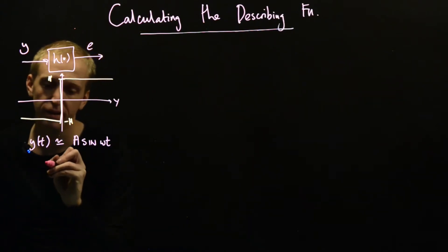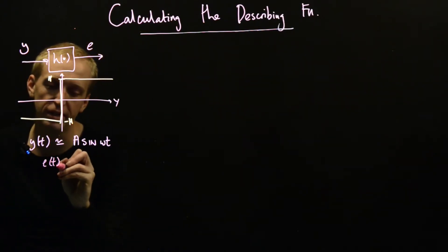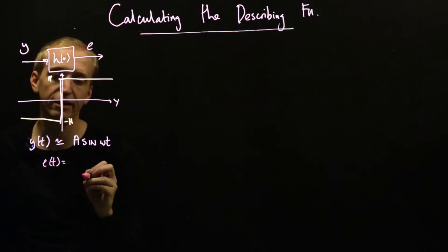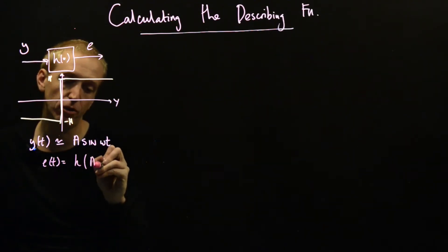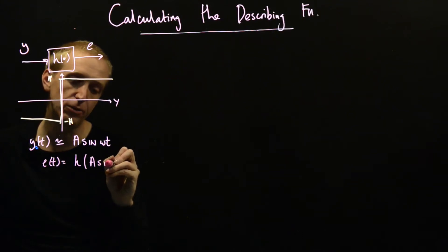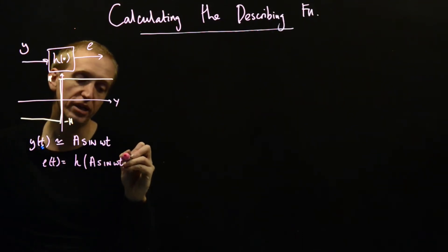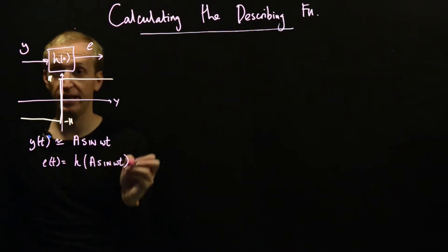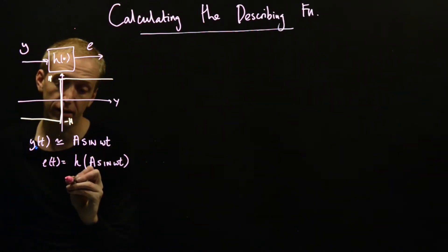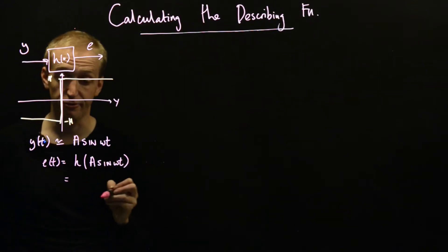And how do we do that? Well, we just introduced the signal e(t), which is the output of our nonlinearity, which is equal to our function h acting on y, when y is equal to a sin(ωt). If the input is periodic, the output is periodic, and it can be written as a Fourier series.